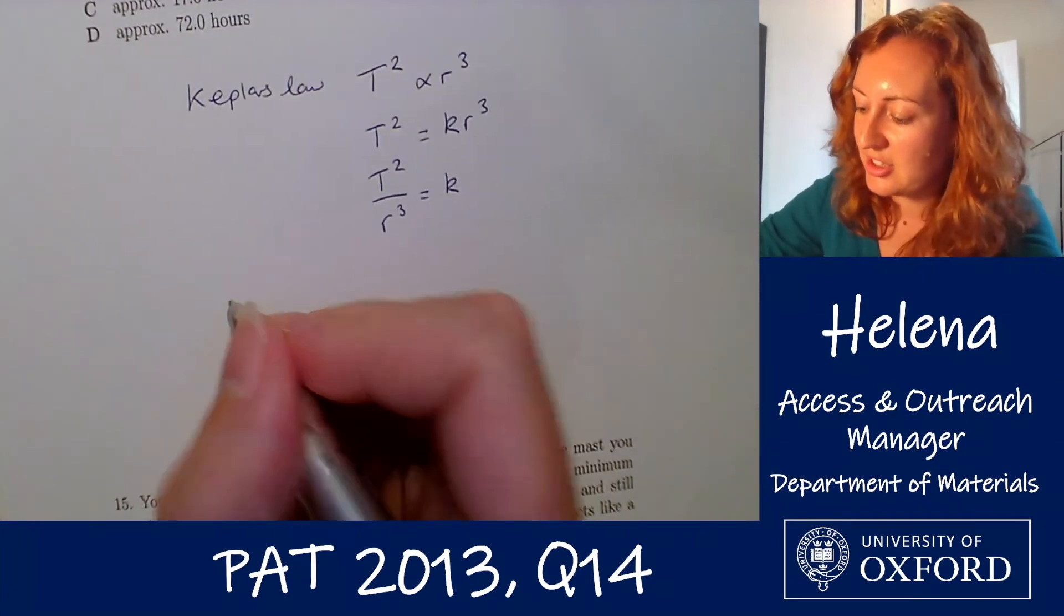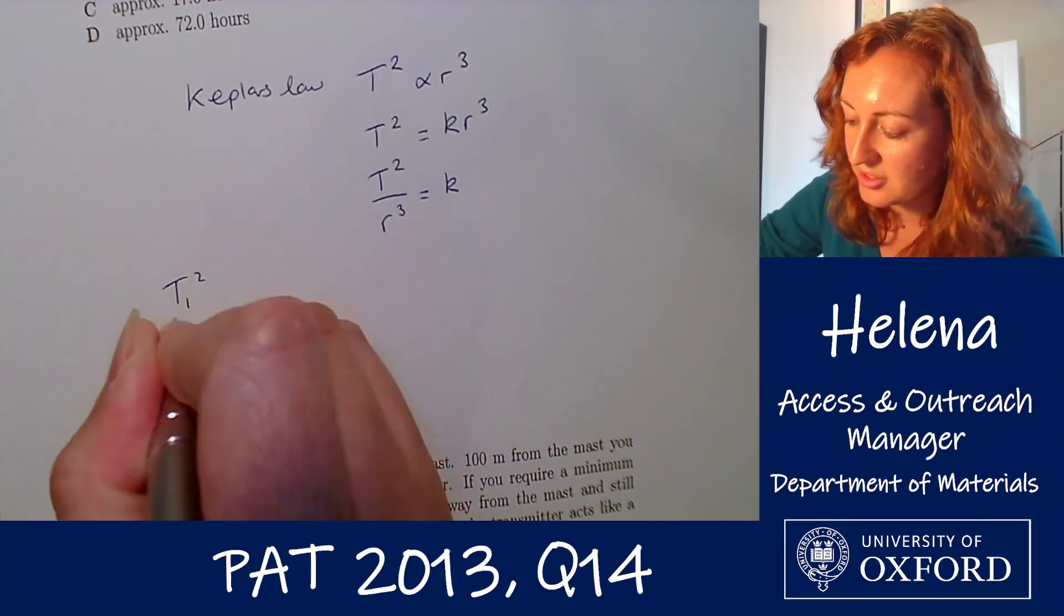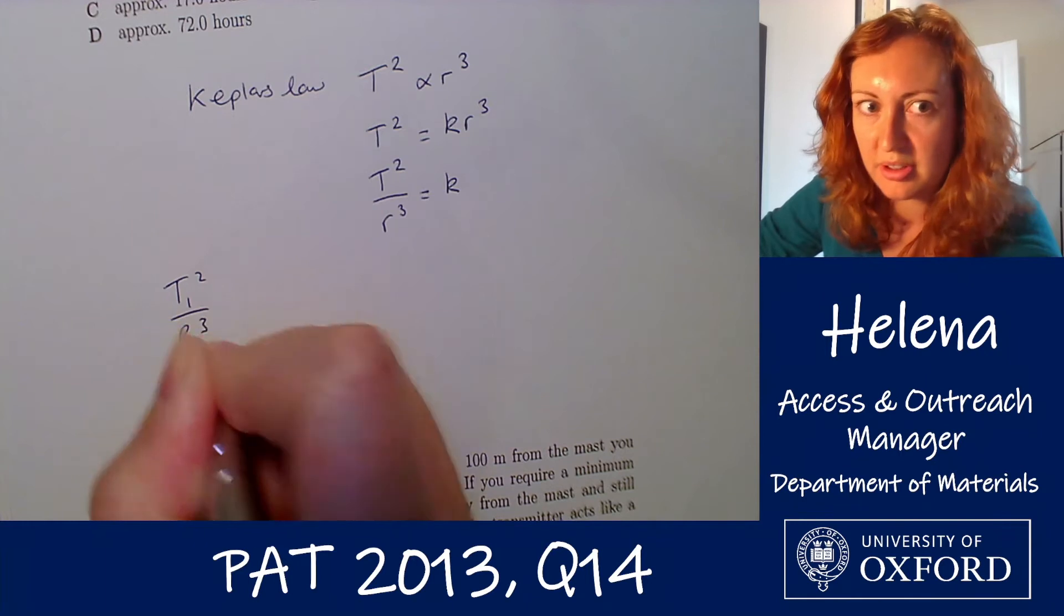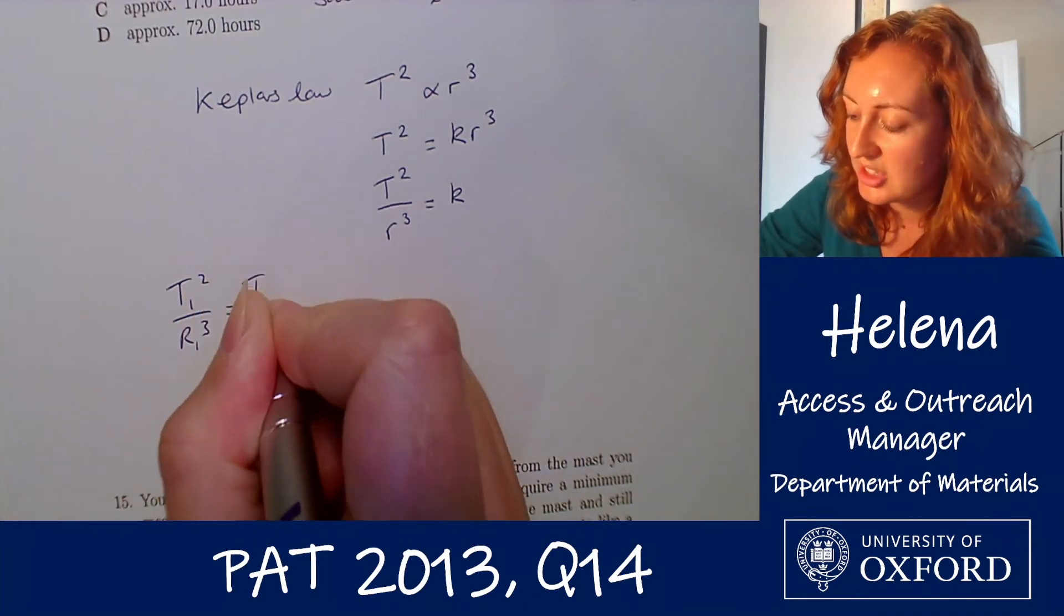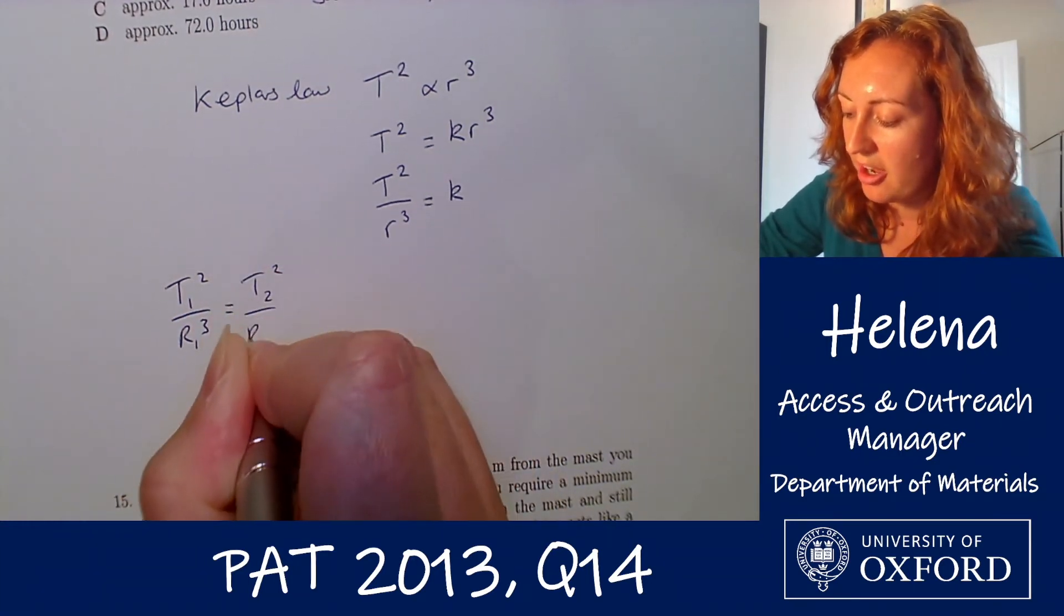So if we do that so we're taking t1 squared over r1 cubed is equal to t2 squared over r2 cubed.